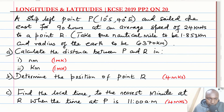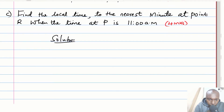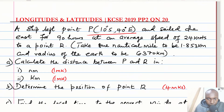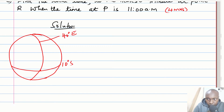Let's go to the first part. You're supposed to calculate the distance between P and R in nautical miles and in kilometers. First, let's have a sketch of position P. So that is the latitude which is 10 degrees south, and then 40 degrees east — that is the longitude. So point P is somewhere here.